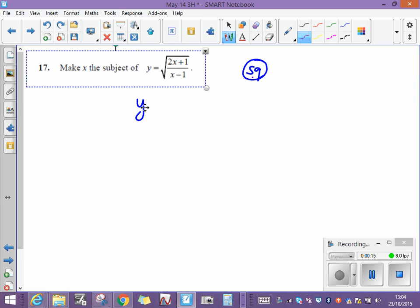So if I square the left side, that is y squared. If I square the square root on the right, the square root disappears. And I've now got 2x plus 1 over x minus 1.